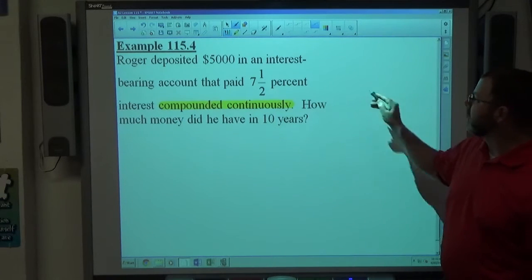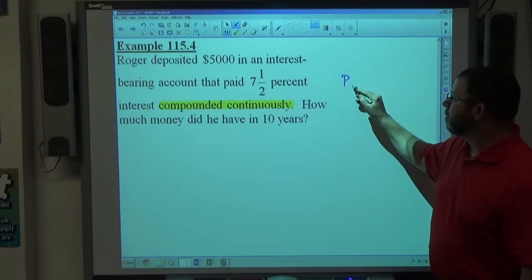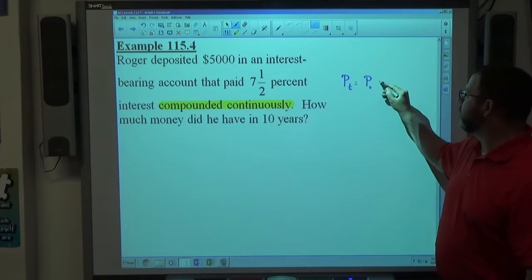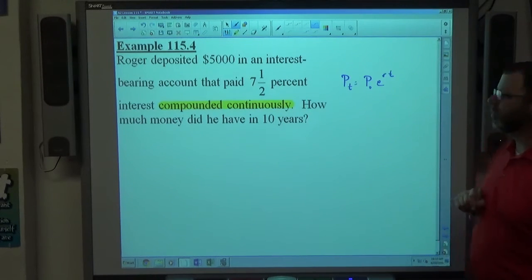The compounded continuous problem looks like this. The final amount of money, p sub t, equals the initial amount of money, p sub 0, e to the rt power. Does that look familiar? What is p sub t? P is for principal.